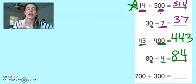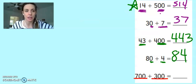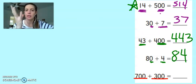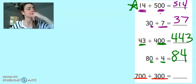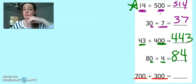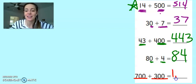And then the last problem. I have 700 plus 300. 700, 800, 900, 10 hundred. I wonder how many 10 hundreds would give us. Do you have an idea? 10 hundreds gives us 1,000.